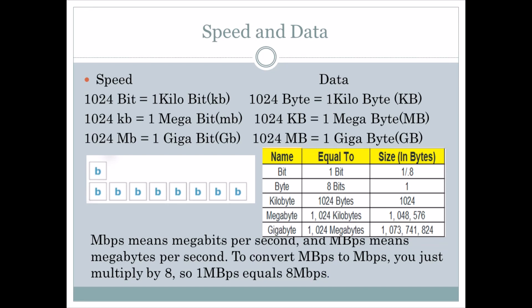Eight bits equals one byte. Bits are represented as binary — zero and one — so eight zeros and ones equal one byte. Speed is always represented in bits and it is always the small 'b' — Mbps. So service providers always represent speed with the small 'b', meaning megabits per second.